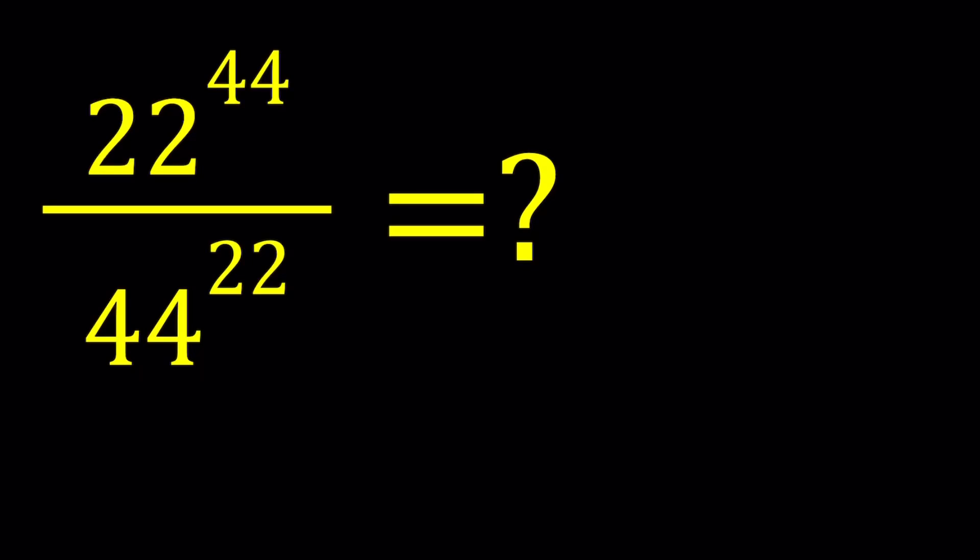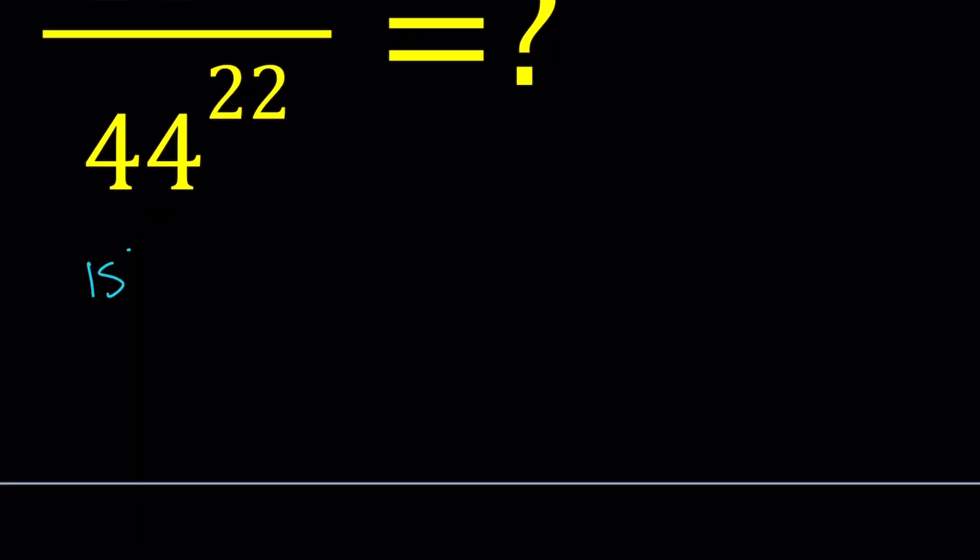Hello everyone. In this video we're going to be simplifying a numerical exponential expression. We have 22 to the power 44 divided by 44 to the power 22, and we're going to simplify this expression as much as possible. I'll be presenting two methods, though there's also a general approach you could consider the third method. Let's get started with the first one.